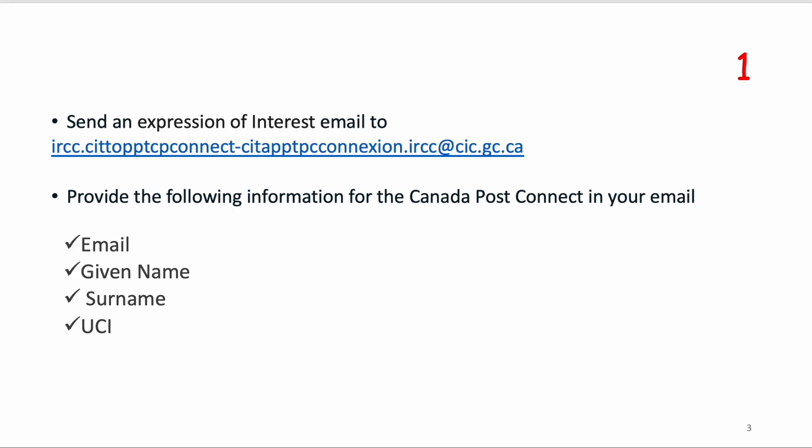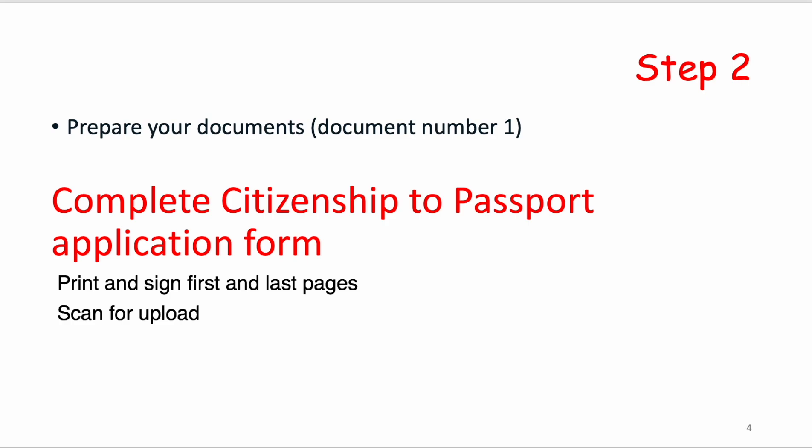If you are interested in applying via this program, the first thing you need to do is send an email of interest to the email shown on the screen, which will also be included in the invitation email. In the body of your email, include your email address for Canada Post Connect, your given name, surname, and UCI number.